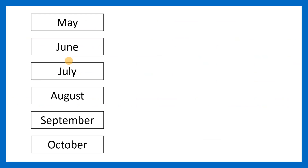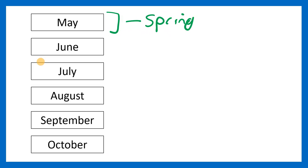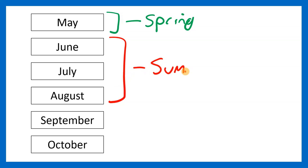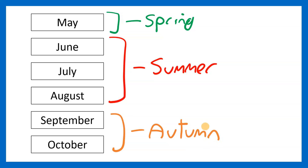Another thing to consider here is the seasons. From May to October, May is spring, then June, July and August are the summer, and then September and October is the autumn. There's a bit of debate about this — some people would say spring stretches into June and summer stretches into September. The main thing is that May is spring, the main summer months are July and August, and October is the autumn. The seasons affect the weather patterns that we see.